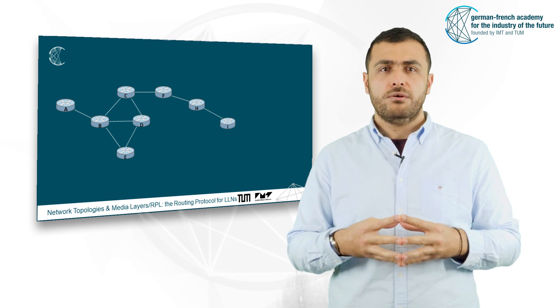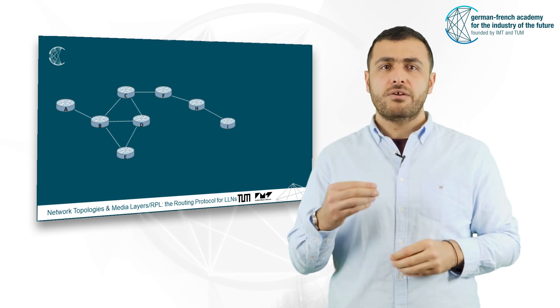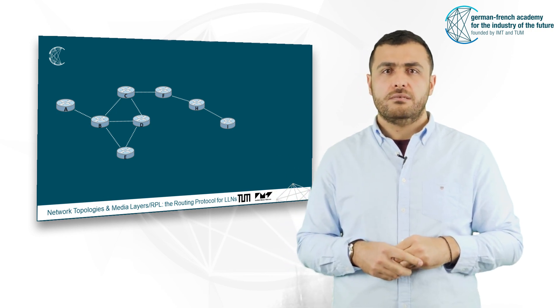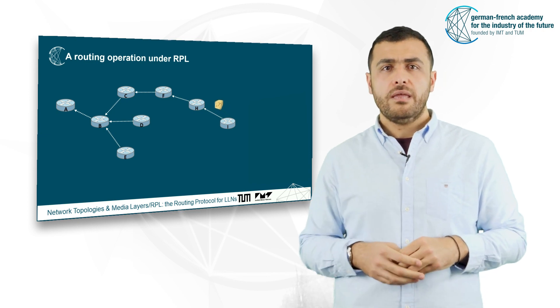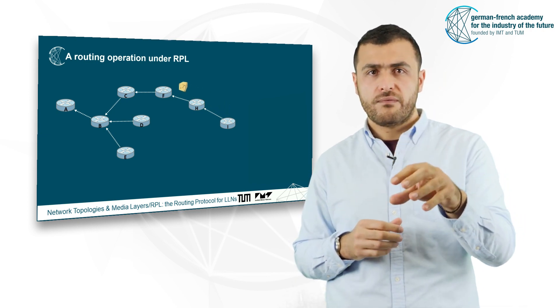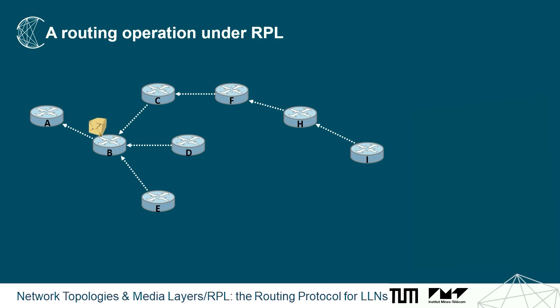In our example here, nodes H, F, C and B may act as relay nodes. Thus, node H will receive the packet from node I and it will forward it to node F, then to node C, then to node B, and finally node B will forward to the final destination node A.